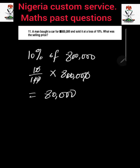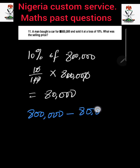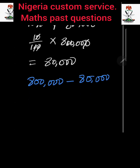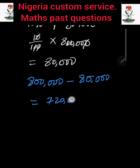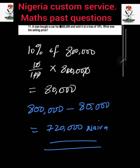To get the selling price, it is the actual money of 800,000 minus the loss of 80,000. 800,000 minus 80,000 gives us 720,000 naira. That is how to answer this question.